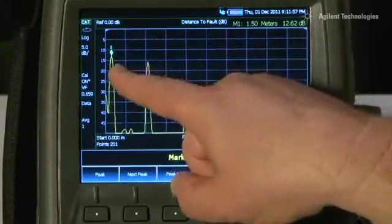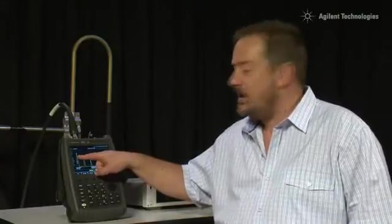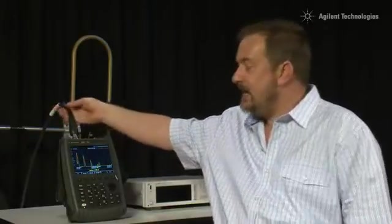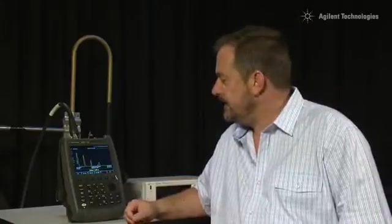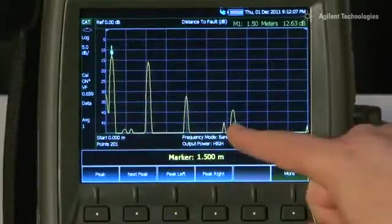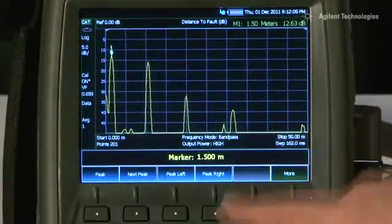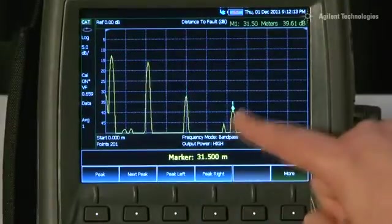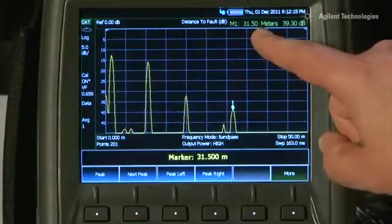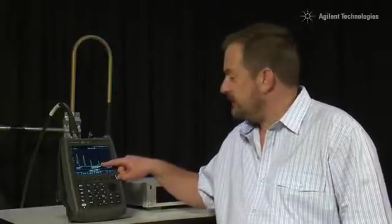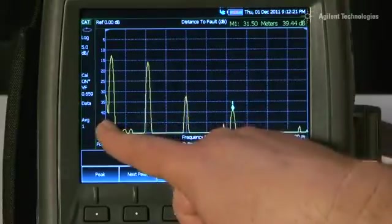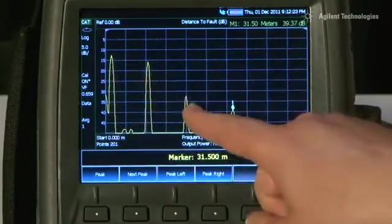That is going to be the very poor quality joiner that I have used intentionally between my 1.5 meter fly lead and the start of my cable run. You will also notice on this 30 meter cable, here is the end of the cable. If I just move the marker right, you will see the cable is 31.5 meters long and that is where the antenna is. But you will see that between the antenna and where we are, there are a number of other discontinuities.